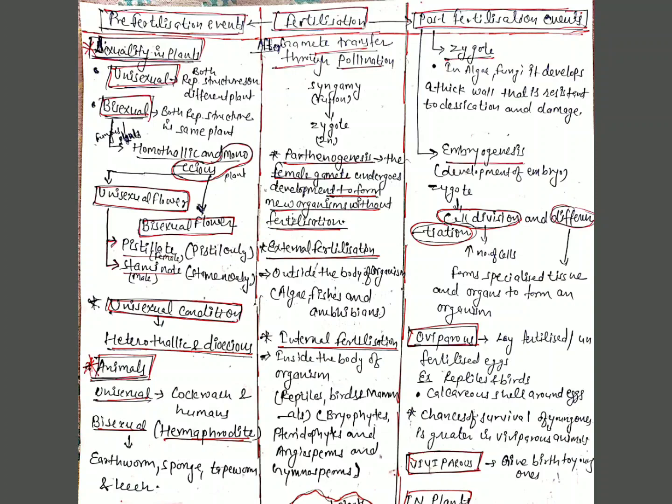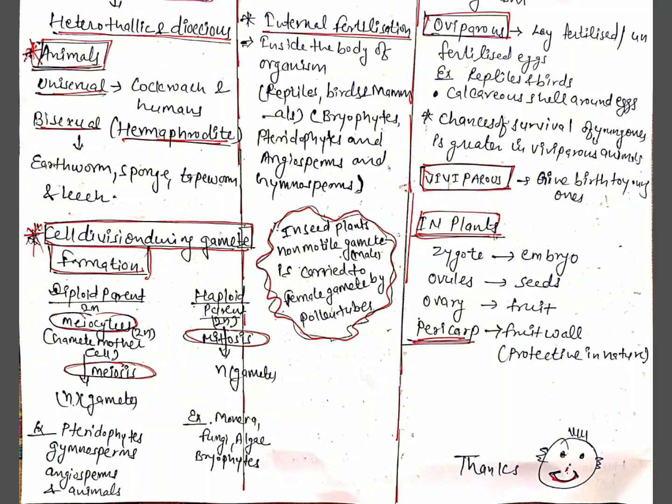Similarly in animals, there may be unisexual animals like cockroaches and humans, and bisexual animals like earthworm, sponge, tapeworm, and leech. Bisexual animals are known as hermaphrodites. Another interesting topic is cell division during gamete formation.